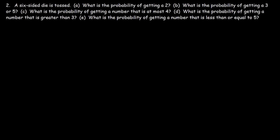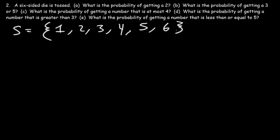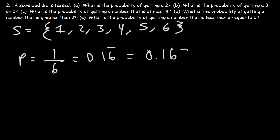Now let's move on to our second problem. A six-sided die is tossed — what is the probability of getting a two? The sample space is the numbers one through six. There's only one two out of six possible outcomes, so we have one favorable outcome out of six. One over six as a decimal is approximately 0.167, which is about 16.7%.